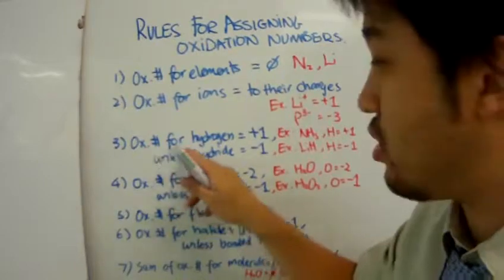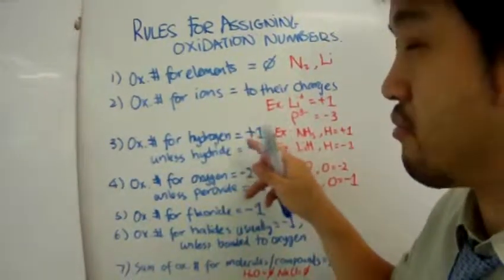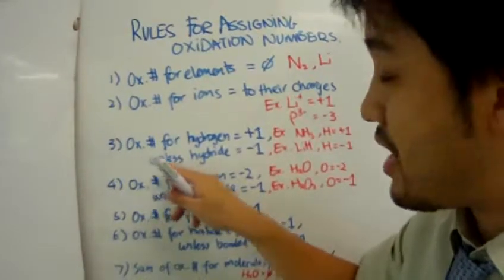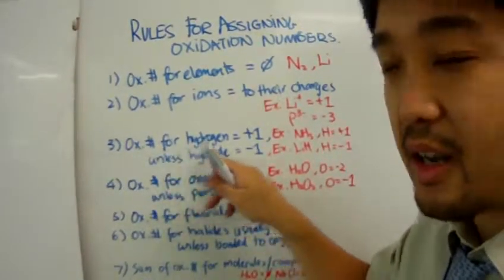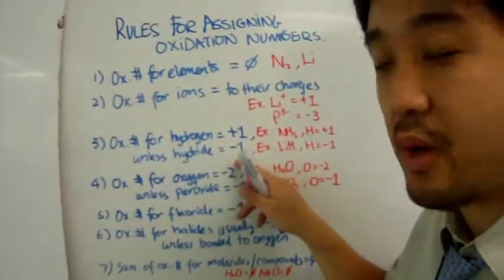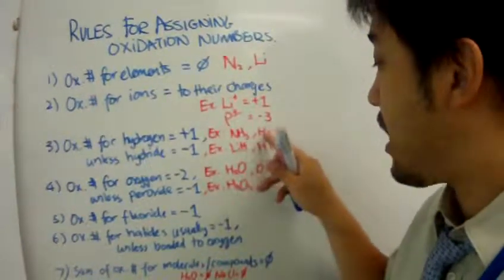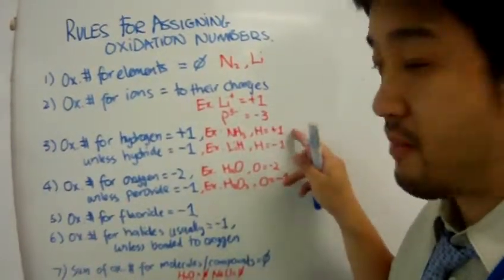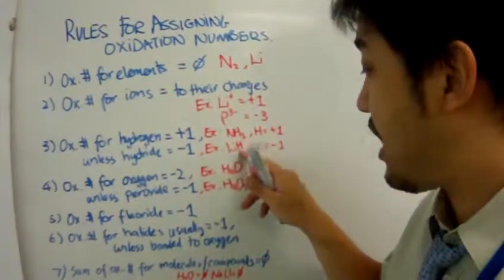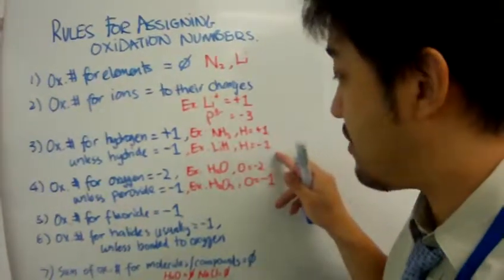The oxidation number for hydrogen in a molecule or compound is always plus one, unless that hydrogen is a hydride — then it will be minus one. For example, in ammonia the hydrogen will always be plus one. But in lithium hydride, the hydrogen will have an oxidation number of minus one.